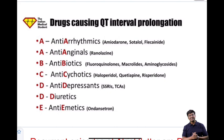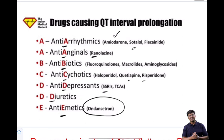Drugs that cause QT prolongation can be remembered using the mnemonic ABCDE: A – antiarrhythmics (amiodarone, sotalol, flecainide) and anti-anginal (ranolazine); B – antibiotics (fluoroquinolones, macrolides, aminoglycosides); C – antipsychotics (haloperidol, quetiapine, risperidone); D – antidepressants (SSRIs, tricyclic antidepressants) and diuretics; E – antiemetics (ondansetron). These are the drugs that cause QT interval prolongation.